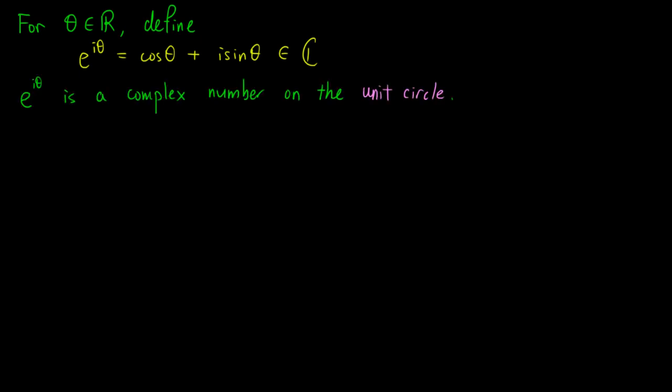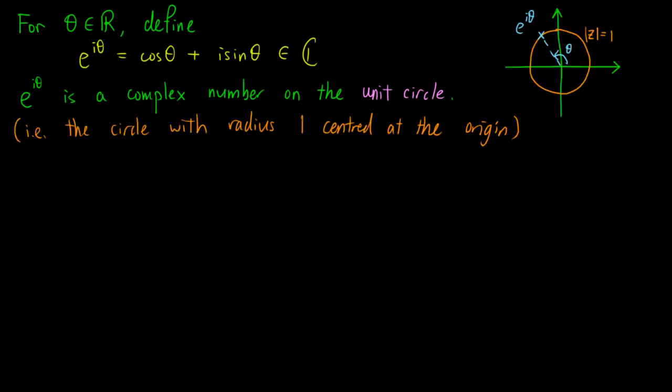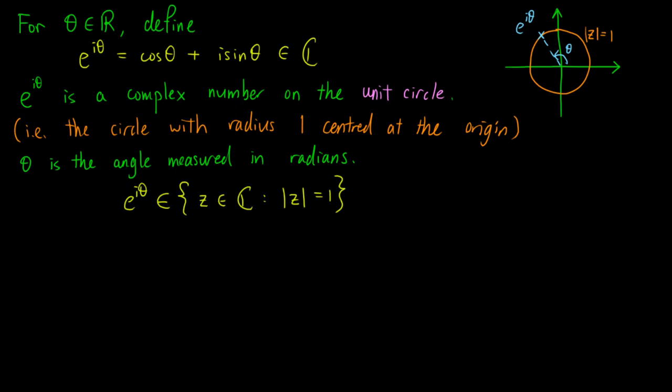Geometrically, e to the iθ is a complex number on the unit circle, which is the circle with radius 1 centred at the origin. θ is the angle measured in radians. Note that the absolute value of e to the iθ is 1.